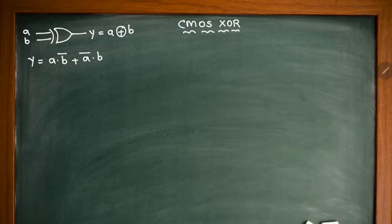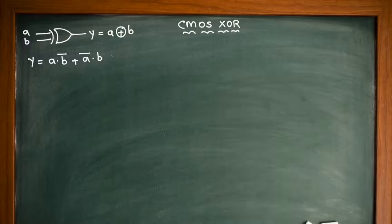Now the first foremost thing that we need to know is in order to draw the schematic of CMOS there should be a whole bar. If you observe here, this particular Boolean expression does not contain whole bar. So we need to get that particular whole bar by applying De Morgan's laws.